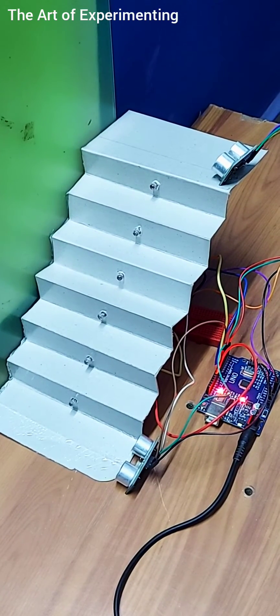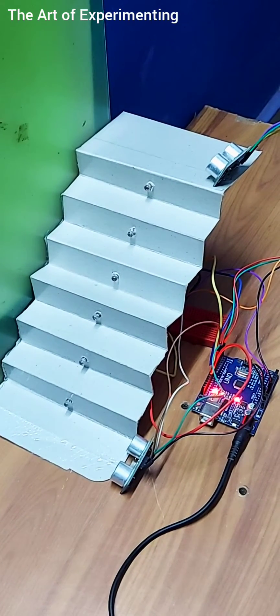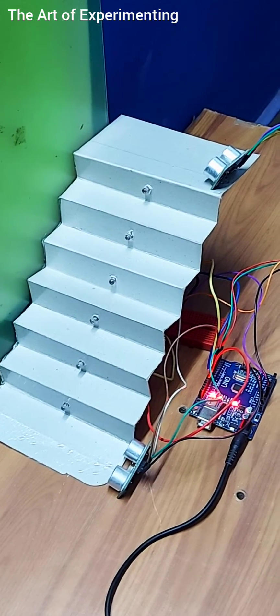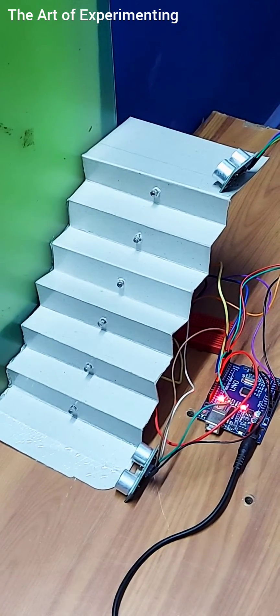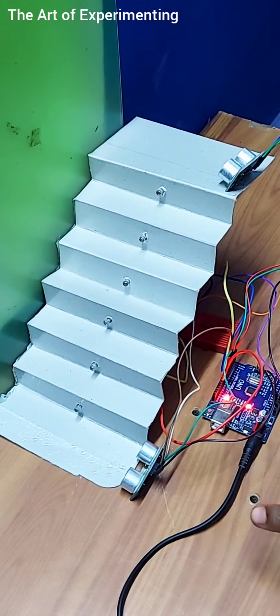Hello all. In this project I have made a staircase lighting system. I have connected six LEDs at each step and I have connected two ultrasonic sensors, one at the bottom and one at the top.